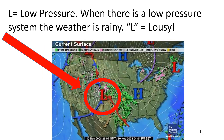The opposite of high pressure is the L on a weather map. That stands for low pressure. When there is a low pressure system, the weather is usually rainy, snowy, or just not very nice. The L can stand for lousy weather. Go ahead and pause this video and write down the definition of low pressure.